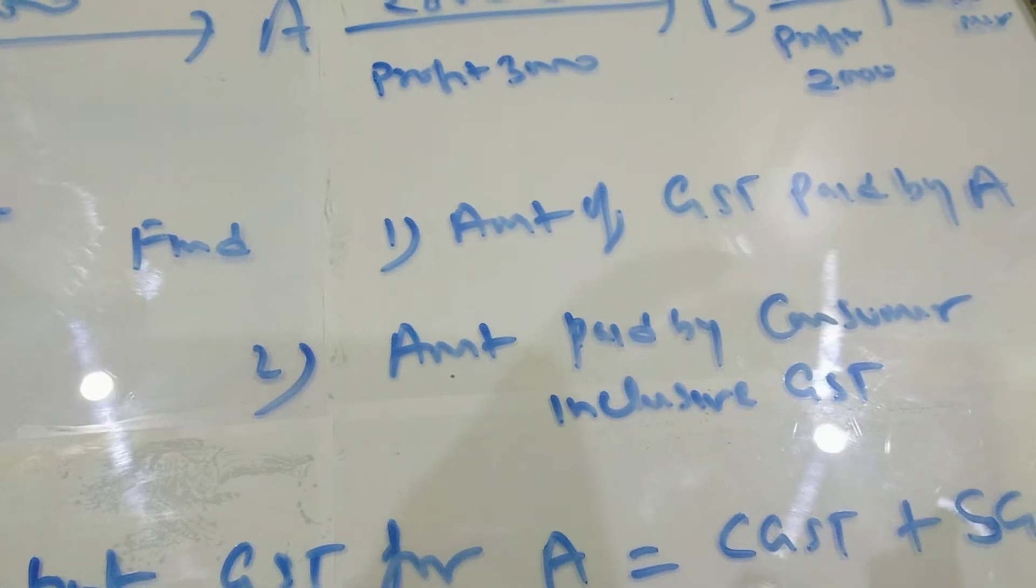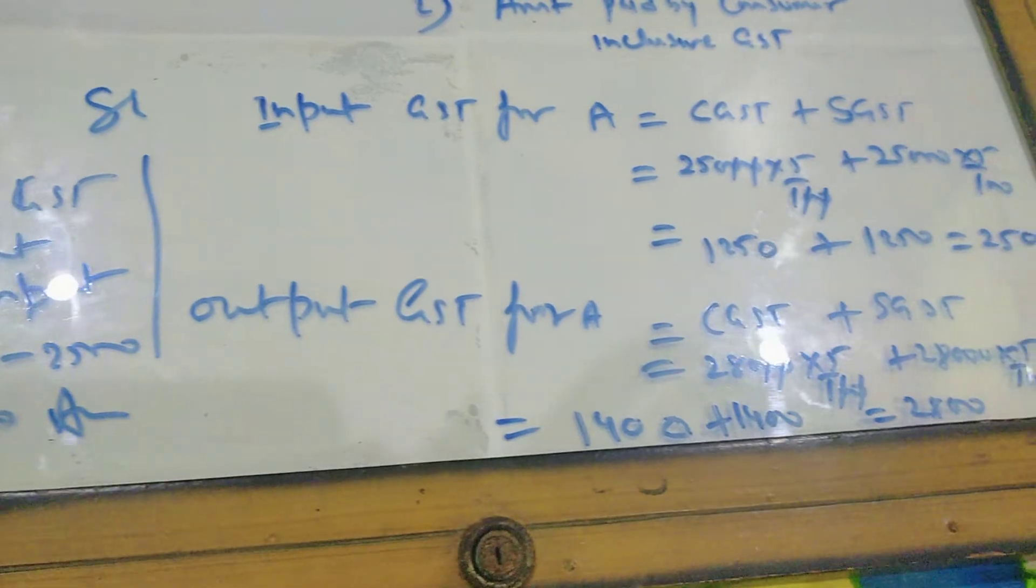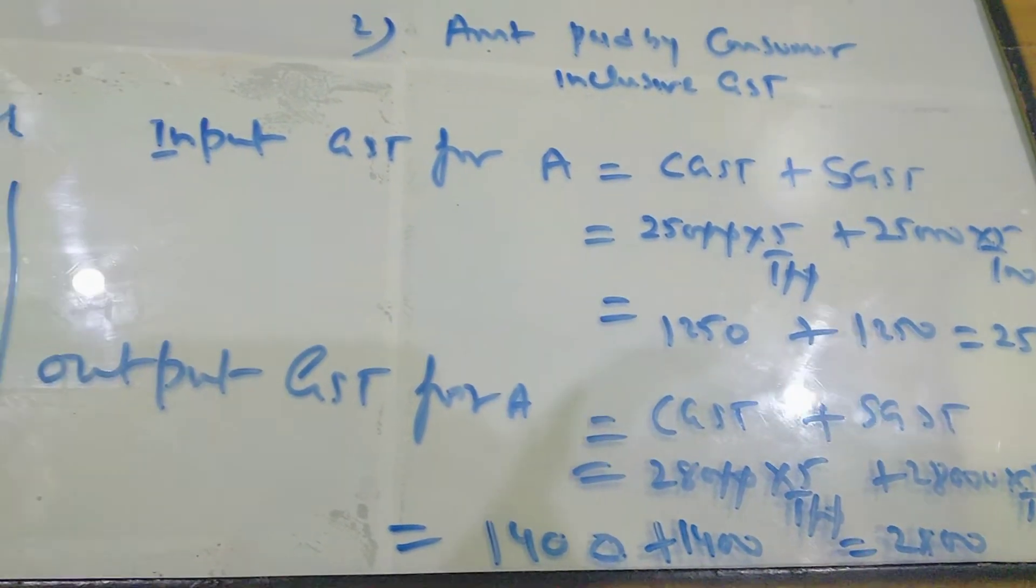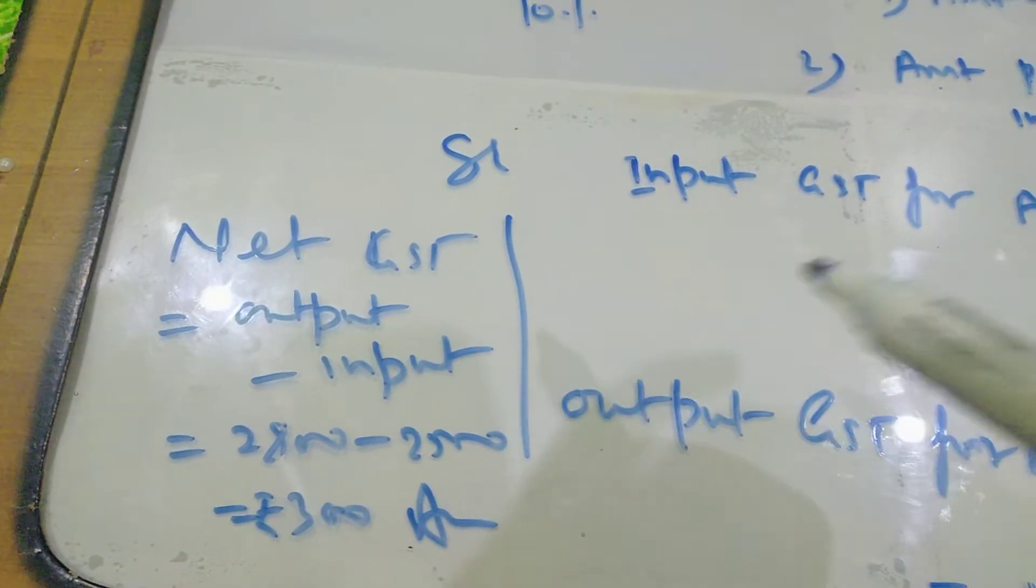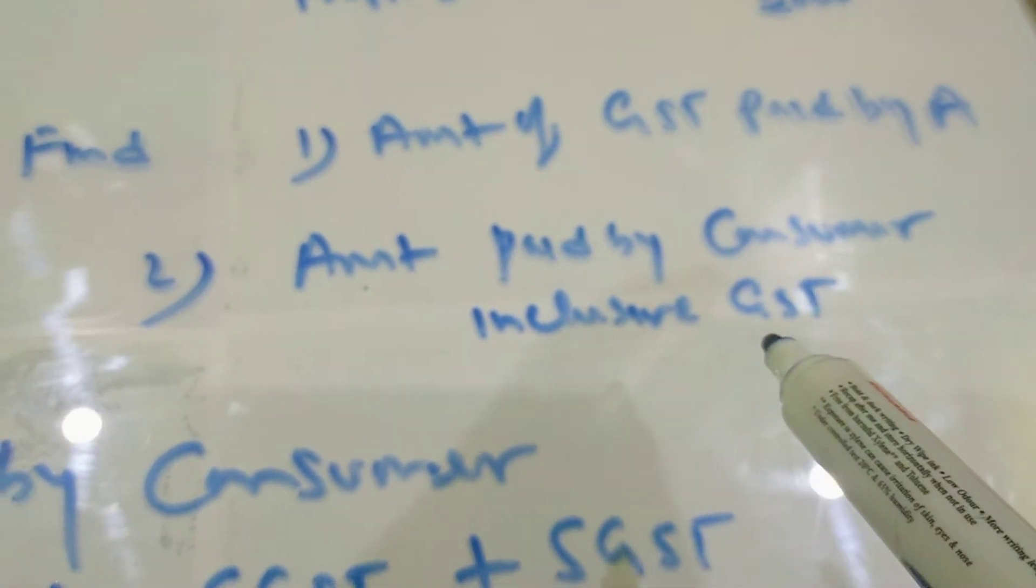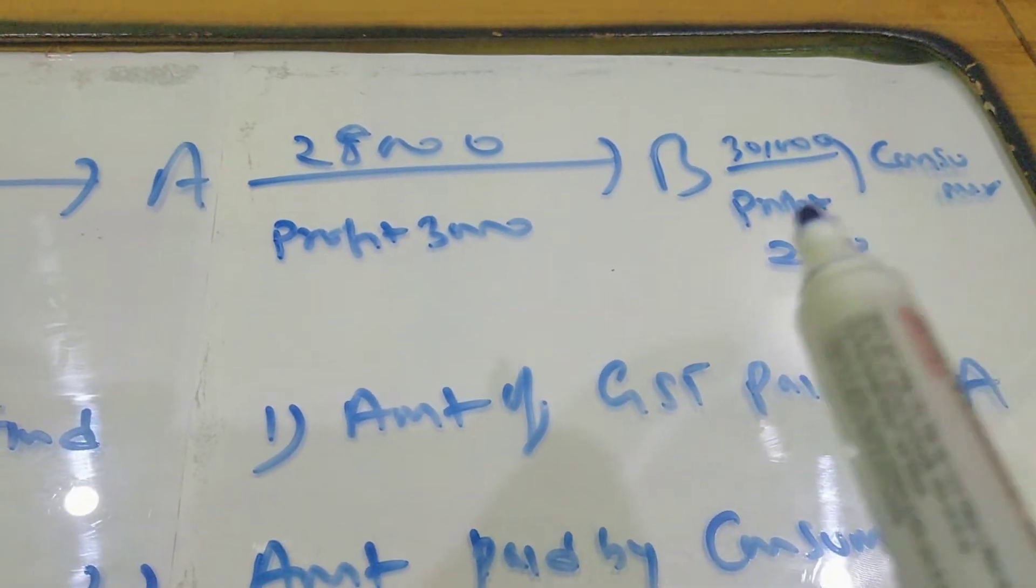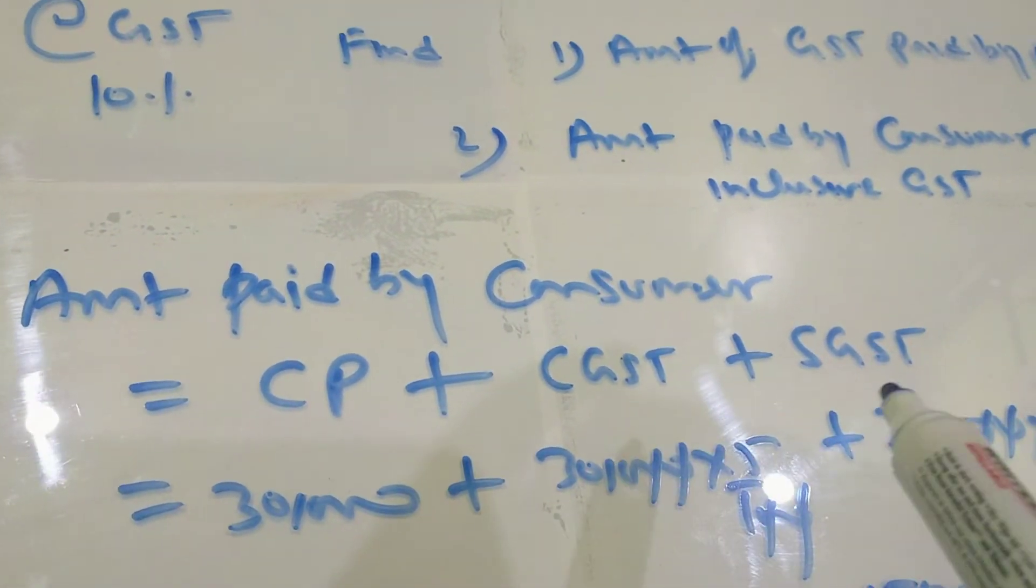Now I want to start the second part of this question. The second part is amount paid by consumer inclusive GST, because the consumer is not making any business. So he has to just pay cost price plus tax. So amount paid by consumer equals cost price plus CGST plus SGST.